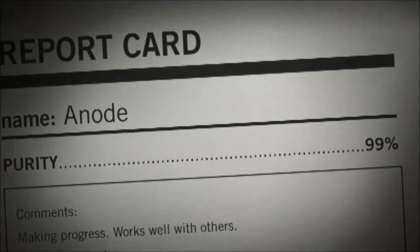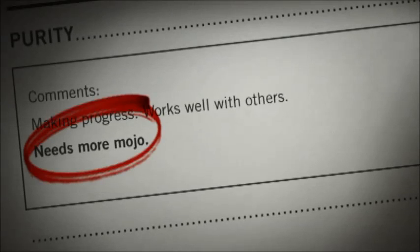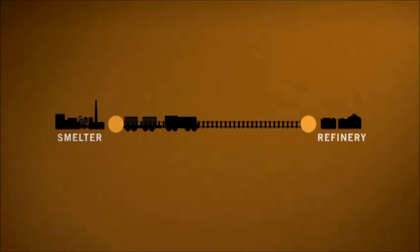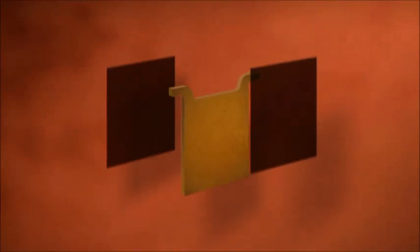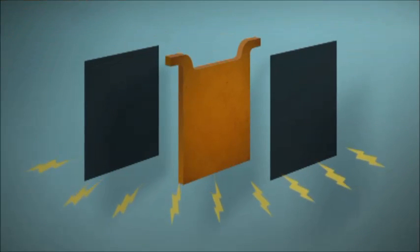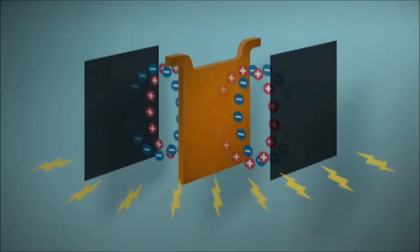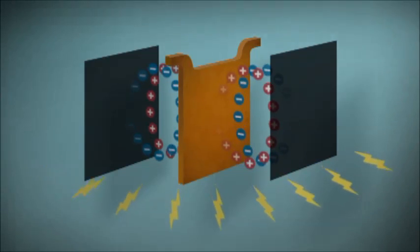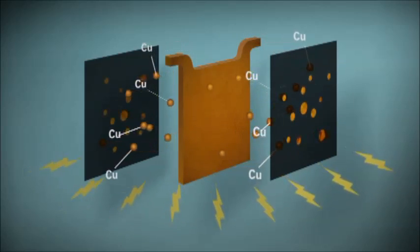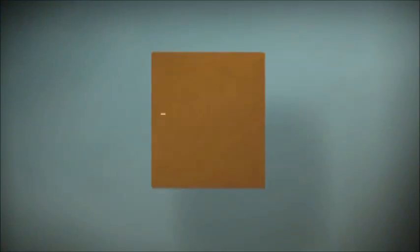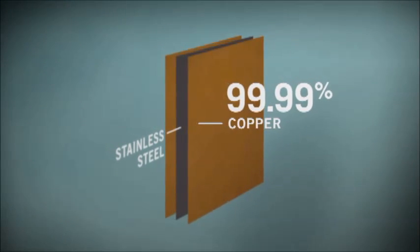99% pure copper is good, but getting to 99.99% takes a little extra molecular mojo. The anodes are shipped to a final tank house facility, where they're sandwiched between stainless steel plates and loaded into big square tanks that are designed to conduct electricity. The tanks are filled with an electrolytic solution that creates positive and negative electrical currents, just like the world's biggest car battery. This current causes the pure copper ions to jump to the stainless steel plates. It's a pretty strong attraction. The result is a 99.99% pure copper cathode.